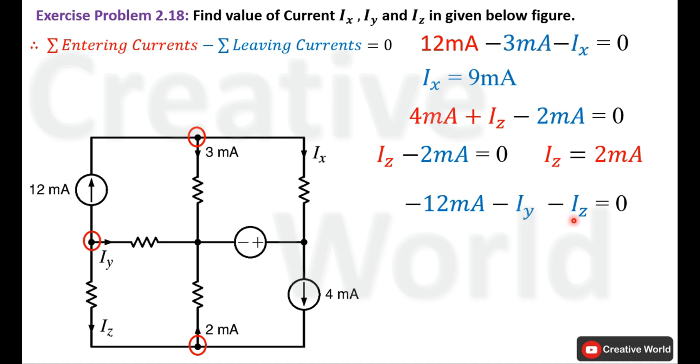We already have calculated the value of Iz. So place the value of Iz inside this equation. It will become minus 12 mA minus Iy minus 2 mA. This minus 2 mA and minus 12 mA will add together and it will become minus 14 mA. Now place this minus Iy on the other hand side of equal to calculate its value, that is minus 14 mA.